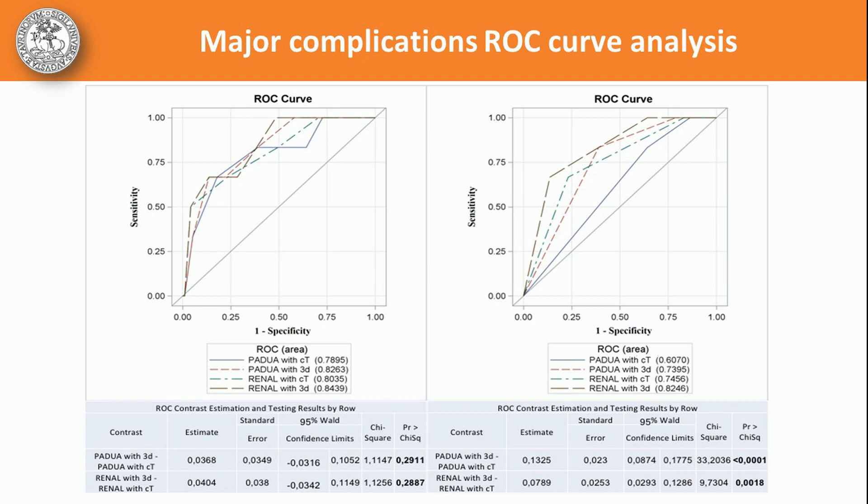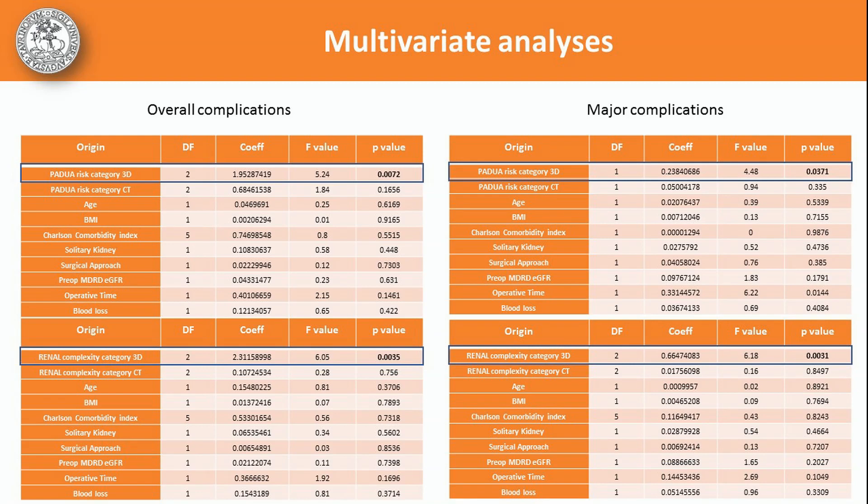Similar results were confirmed considering major complications only. Moreover, multivariable models also showed a superiority of 3D nephrometry categories in predicting both postoperative and major complications. The results of our study suggest that the use of 3D virtual models increases the accuracy in evaluating the surgical complexity of a renal tumor, and it seems more strictly related to the imaging tool considered and not by the type of nephrometry score chosen. Thank you for your kind attention.